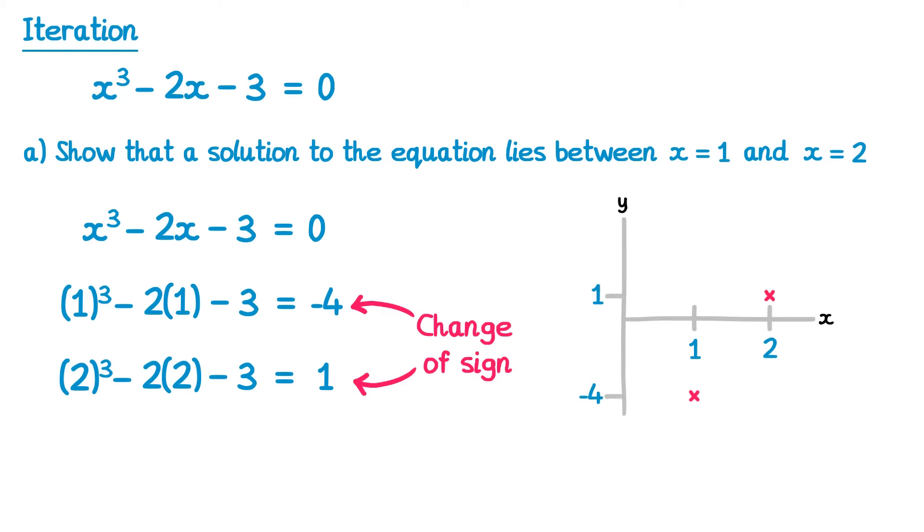So if we were to draw the graph of this, we'd somehow connect up these two points. Now it probably wouldn't be a straight line, but somewhere between these two points, it must cross over the x-axis. When it crosses the x-axis, we know that would be a solution to the equation. So a solution must be between x equals 1 and x equals 2.